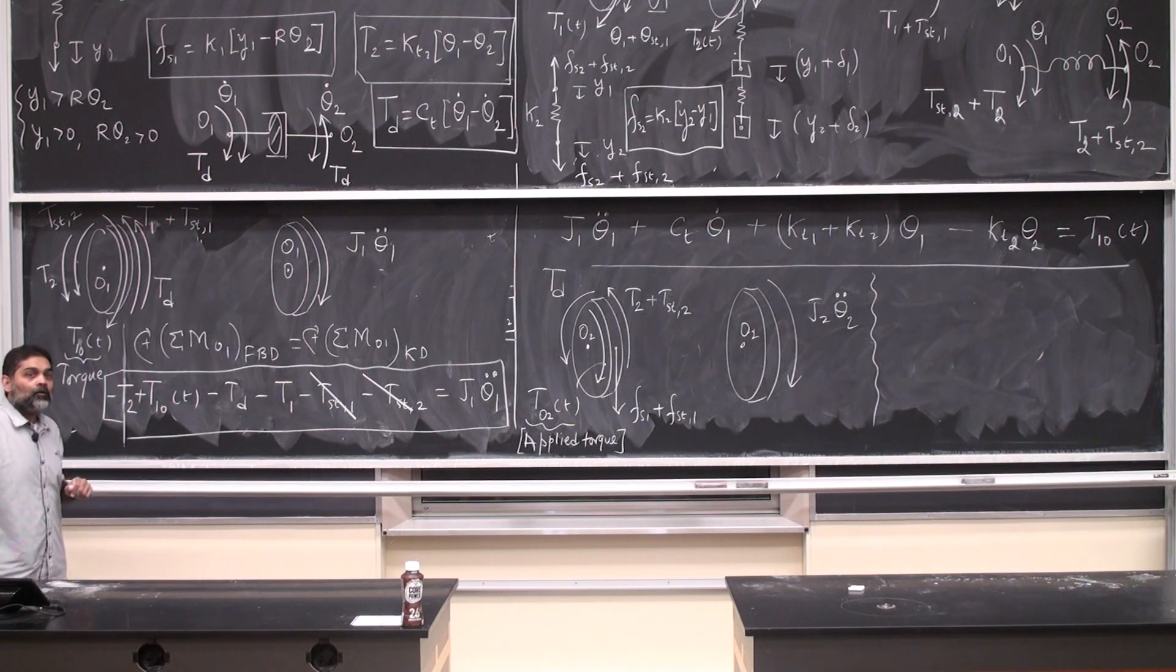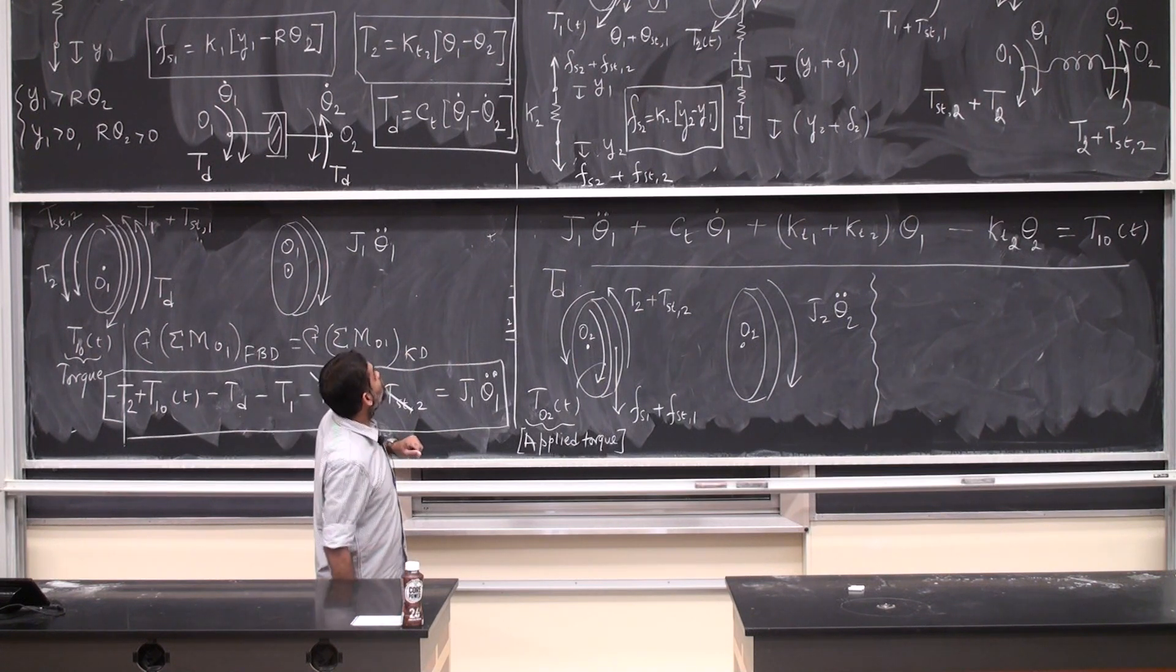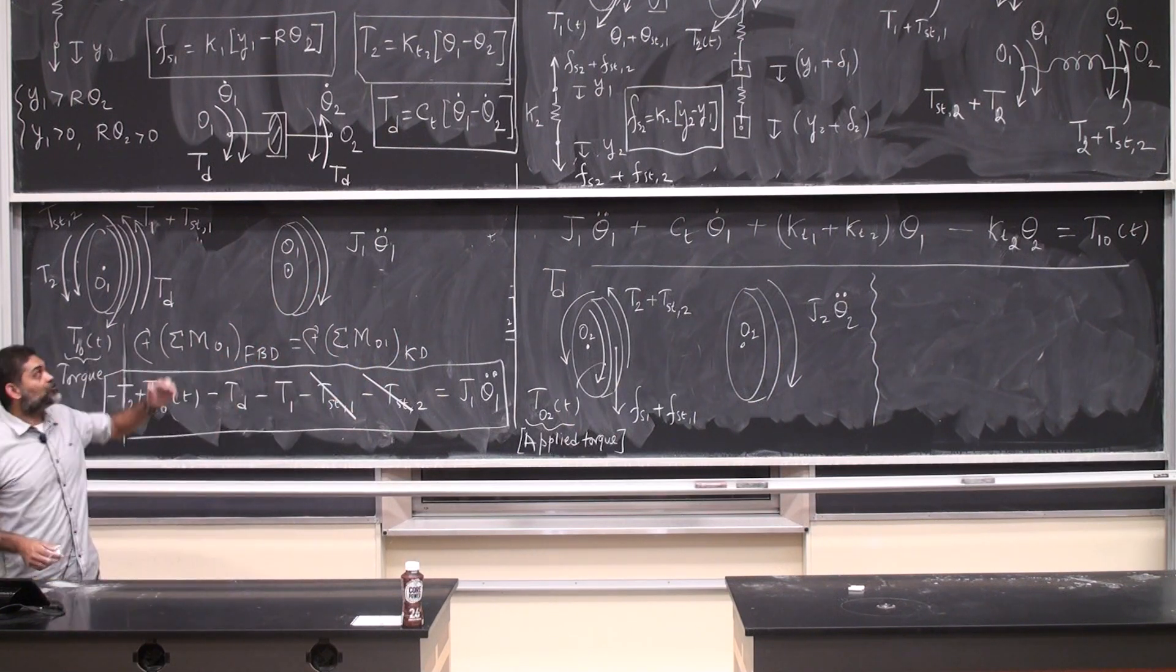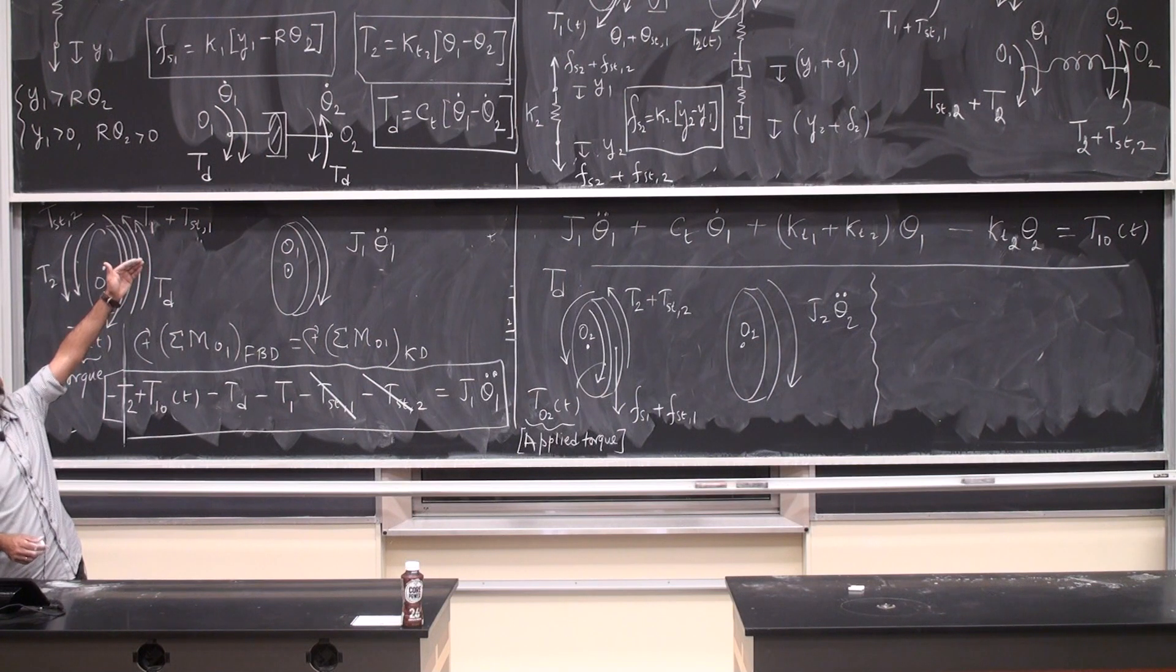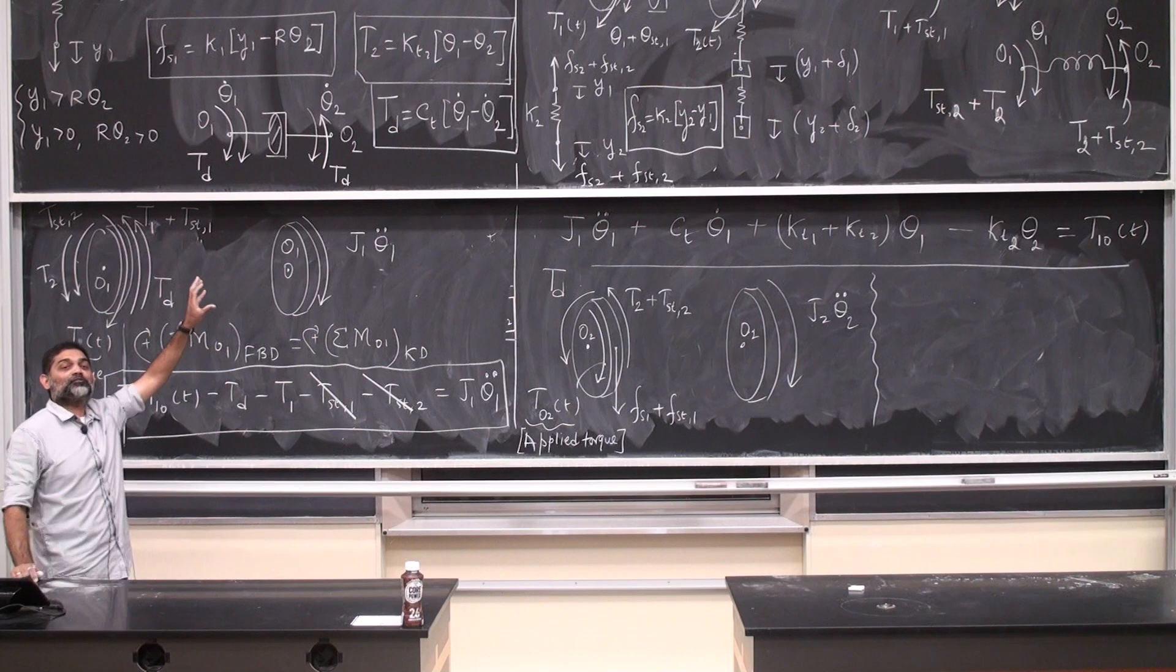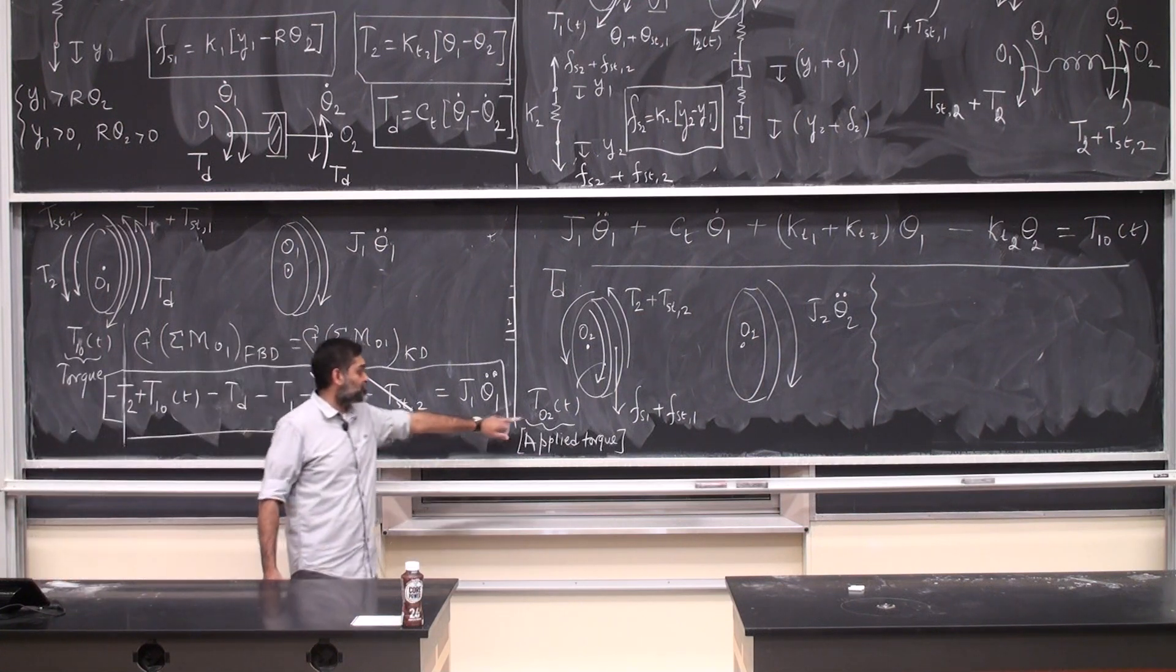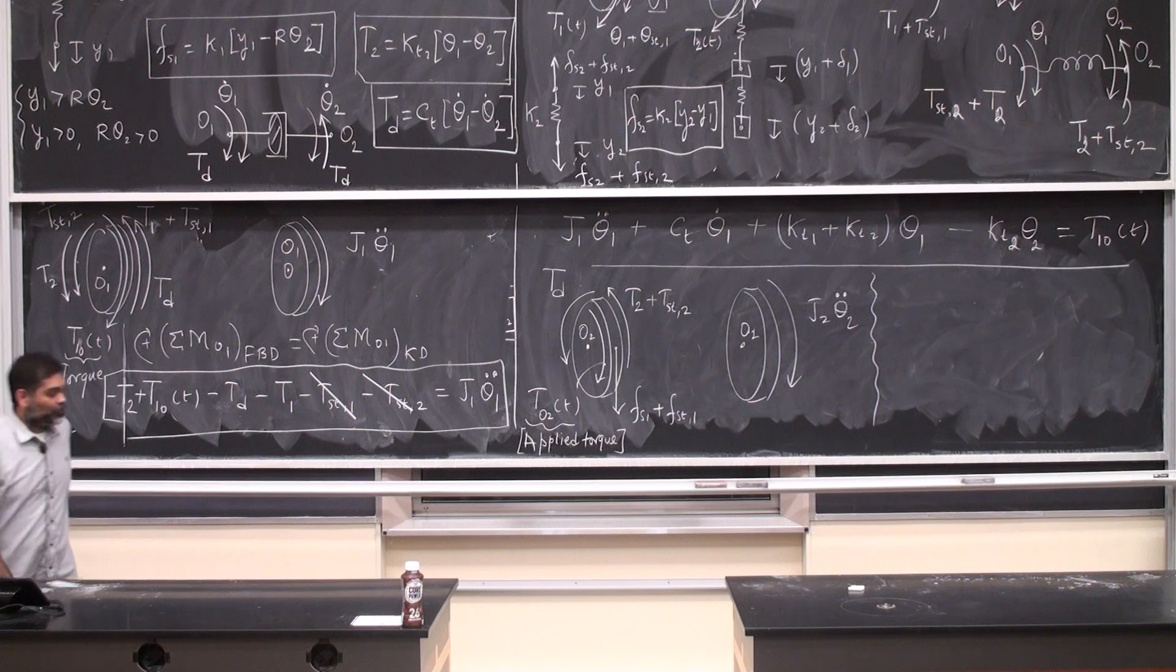You have a question? Is t1 supposed to be on there? T s1 is not supposed to be on there, right? It's only the first one. See, the first spring is connected only to the first disc. The second spring connects the first and the second discs. So the effect of the first spring is felt only on the first disc, not on the second disc directly. What about the applied torque on the first disc? That's here.